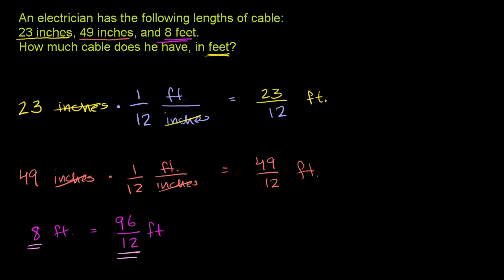And now I can add everything up. The total length of cable he has is, it's 96 over 12 plus 23 over 12 plus 49 over 12. And everything is in feet, so this answer will give us in feet. We have all the same denominators. Our denominator is 12, and so we have to add up 96 plus, so our numerator is going to be 96 plus 23 plus 49. Let's add that up over here.